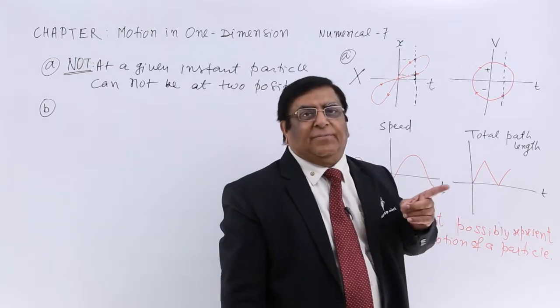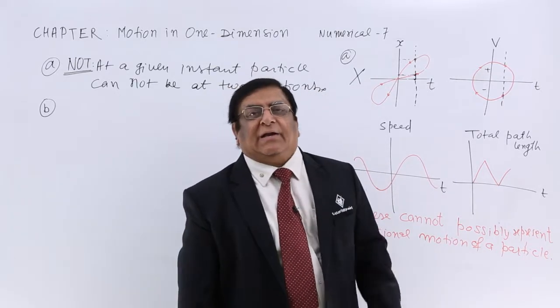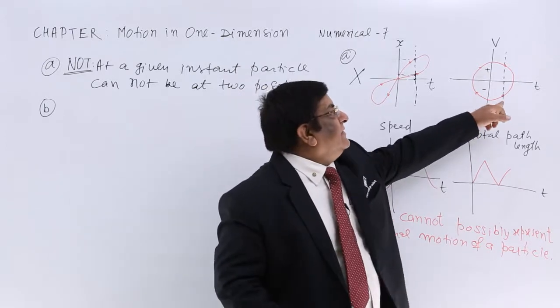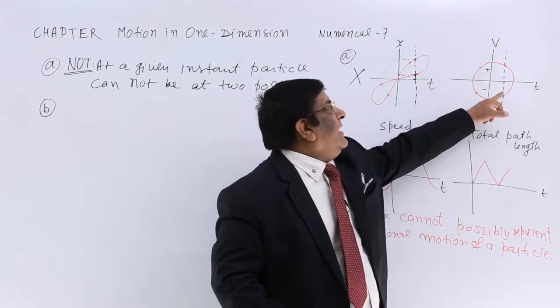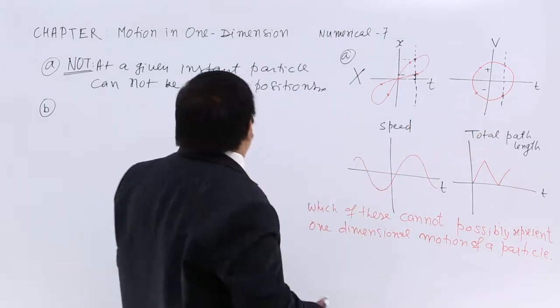Positive, the particle is going in one direction. Negative, the particle is going in another direction. And at one instant particle cannot go in both the directions. This shows the particle is going in both directions at this instant. So this is also not possible.